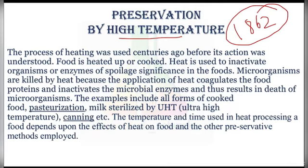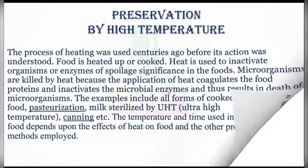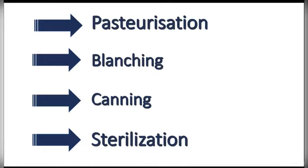Heating can also inactivate the enzymes present in the food, and heating food to high temperature can help prevent spoilage. The specific treatment varies with the organism that has to be killed and the food to be preserved. Other means of preservation may also be used in addition to high temperature. High temperature methods used for preservation are usually of four types: first is pasteurization, invented in 1862.